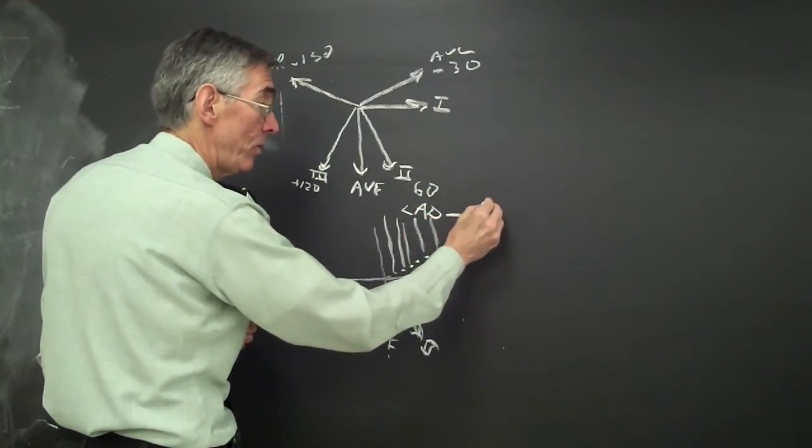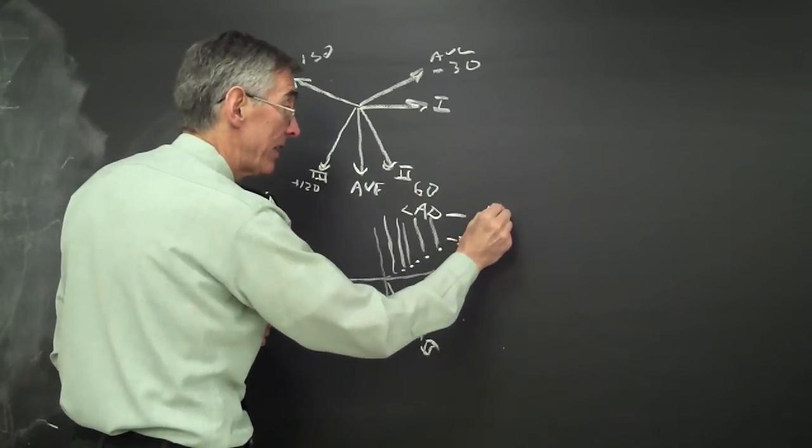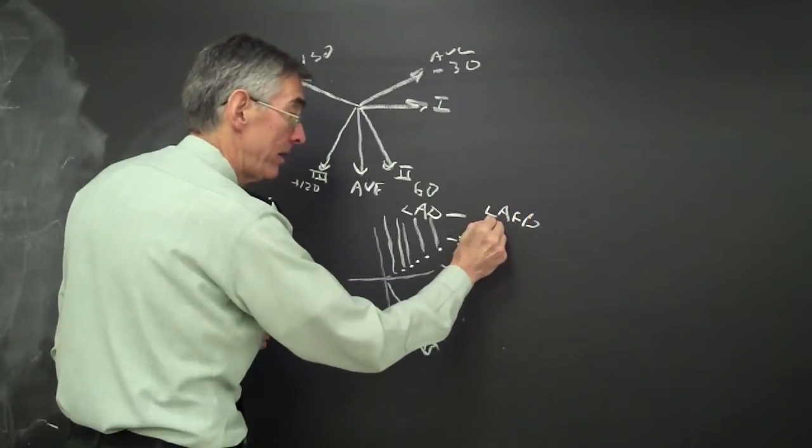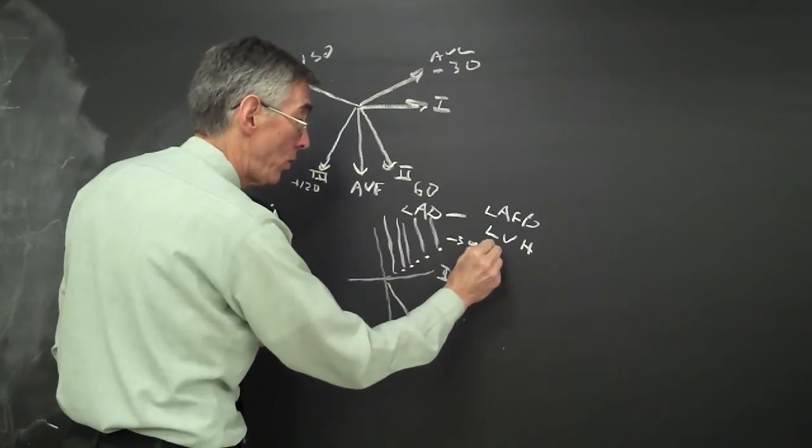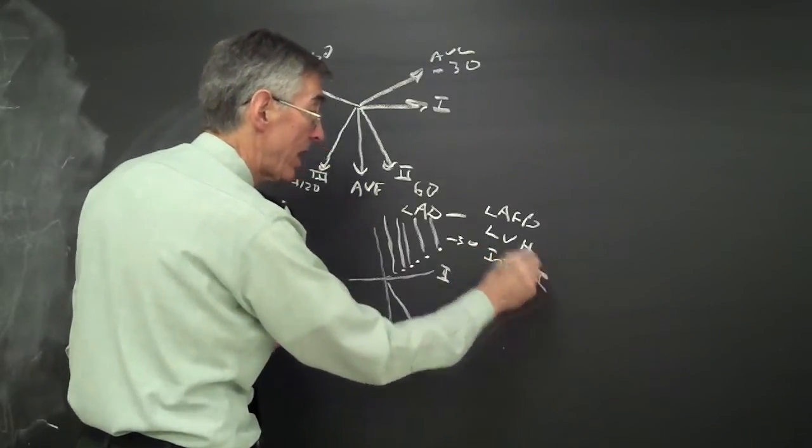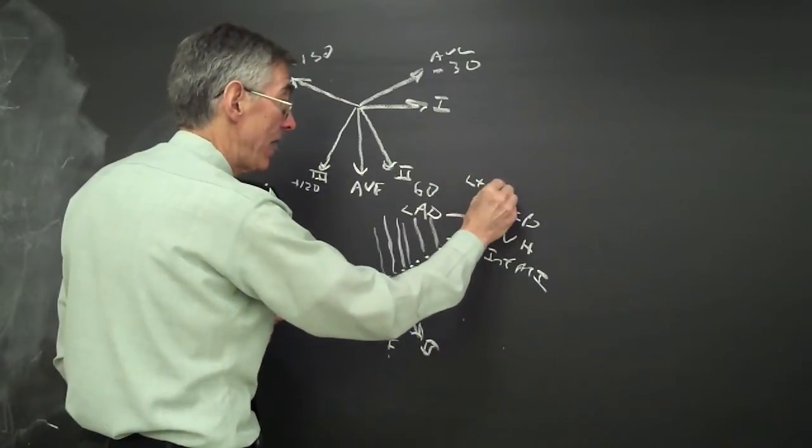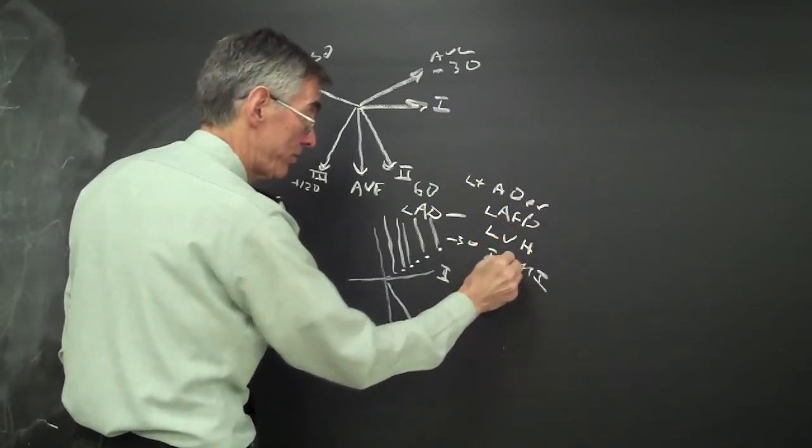With left axis deviation, three diagnoses should come to mind: left anterior fascicular block, left ventricular hypertrophy, or old inferior MI. You can get lots of other causes for left axis deviation, but these are three that should come to mind.